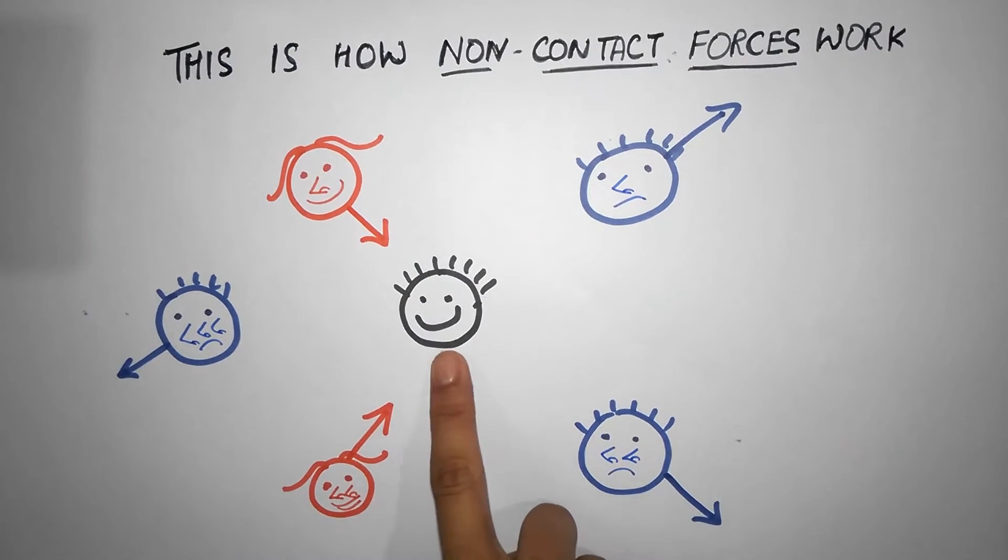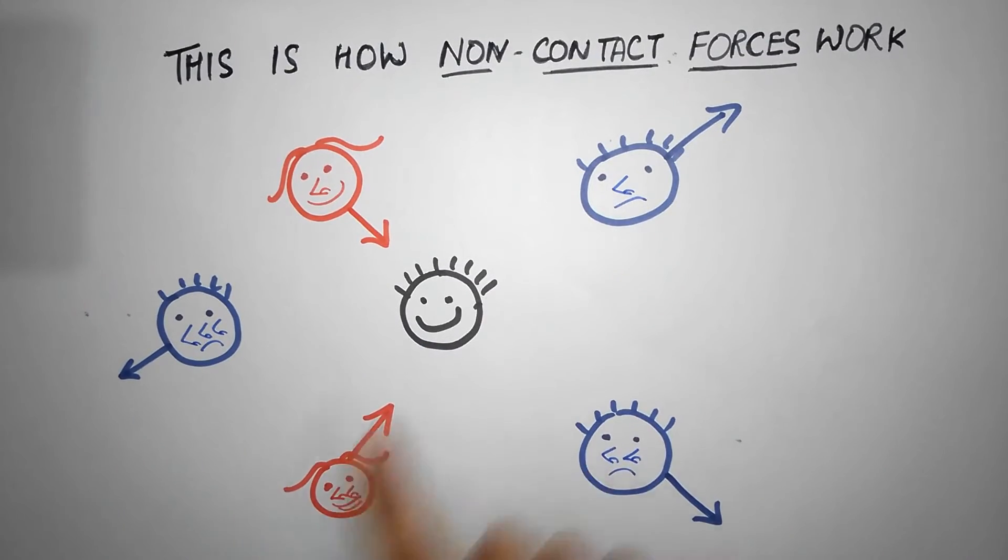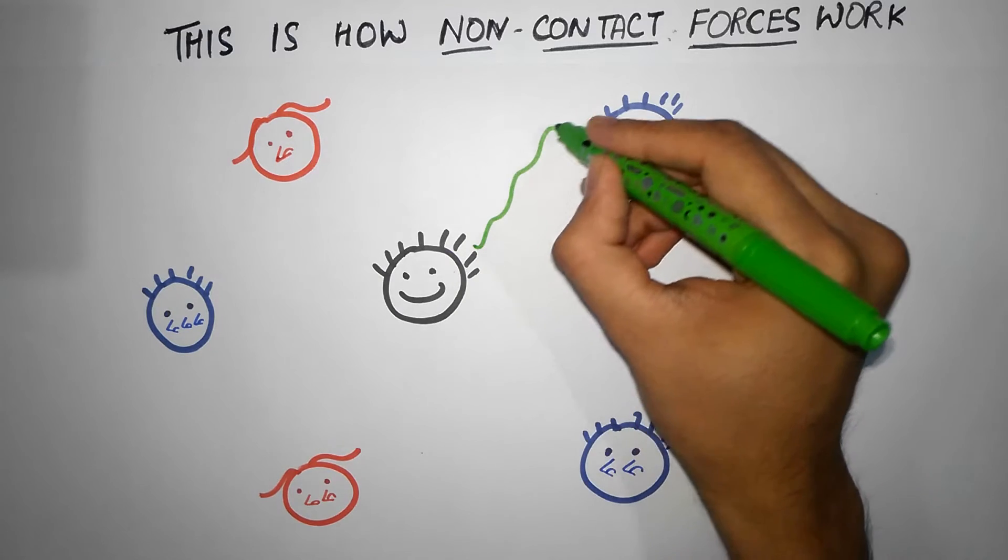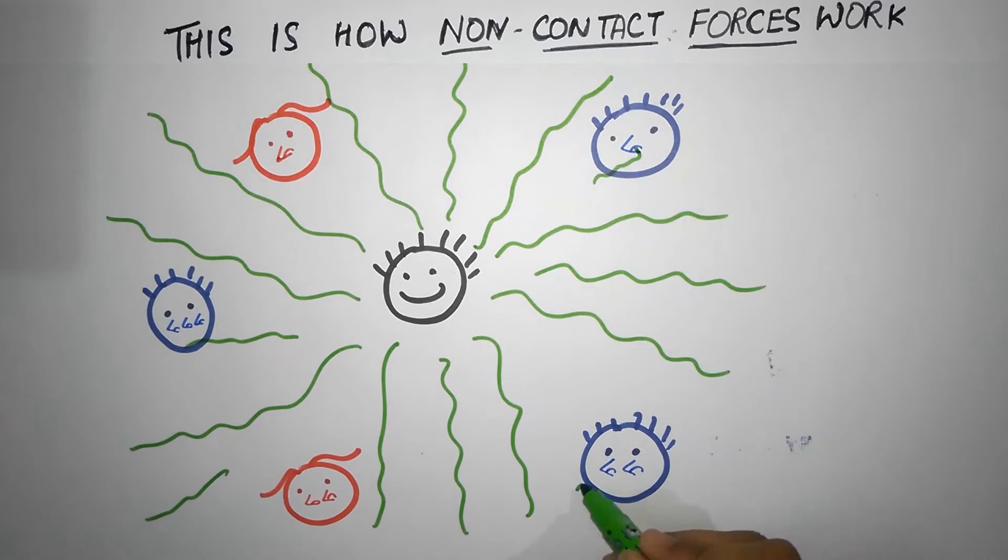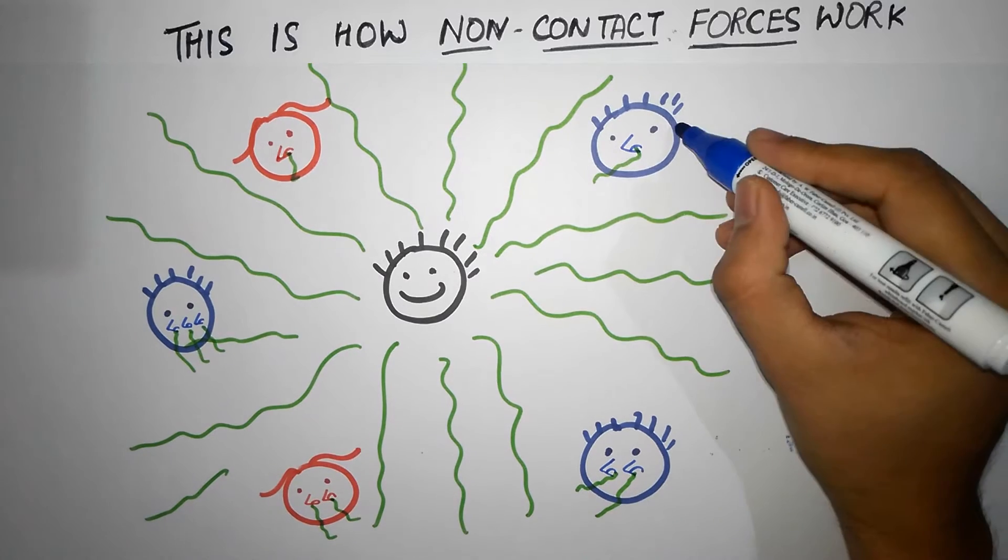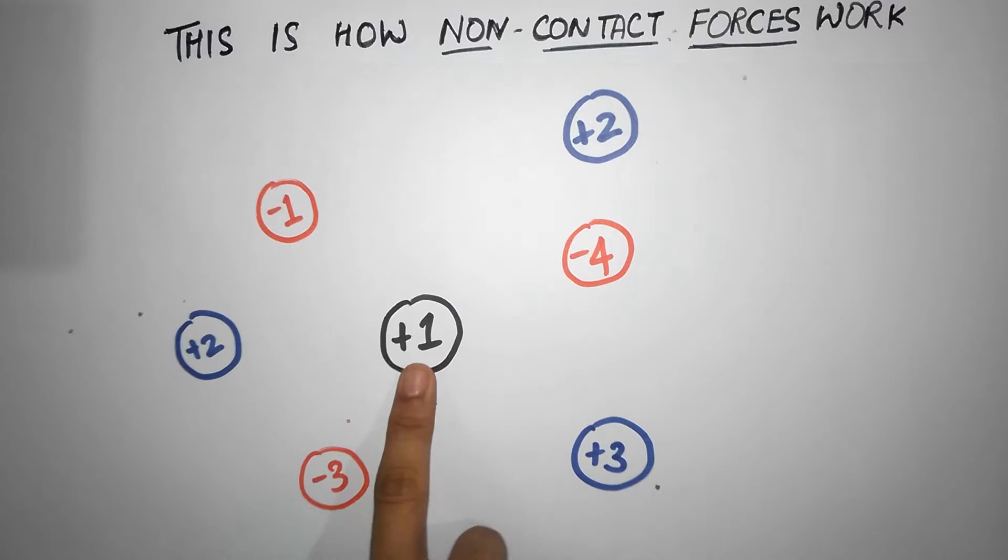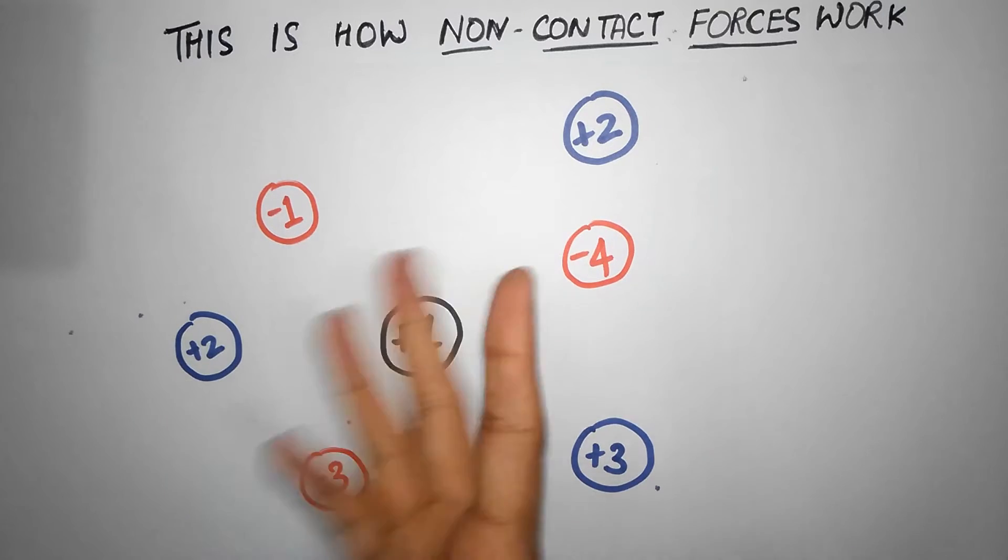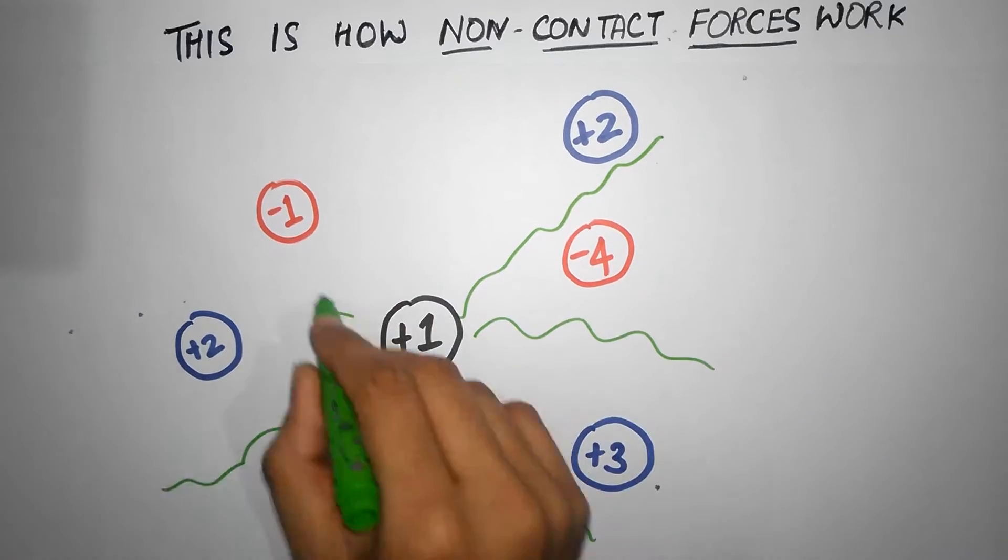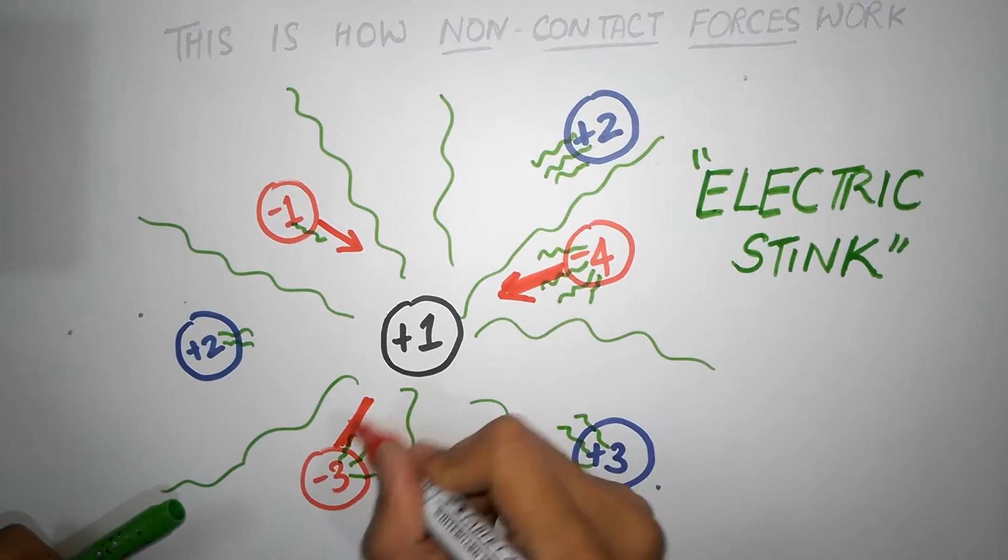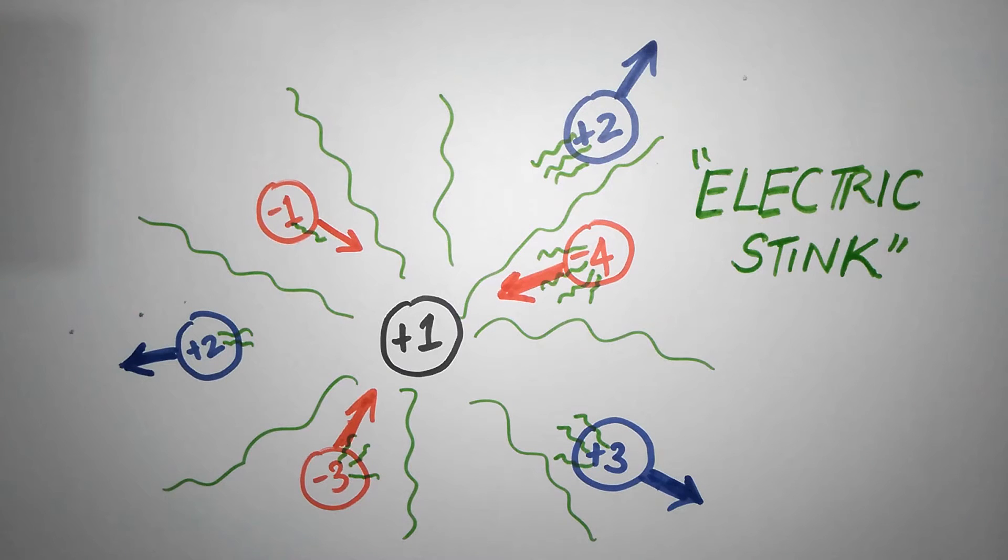Think about it. I'm just standing here and attracting and repelling people without being in contact with them. Notice that I am not doing this directly. My job is just to create a stink in the room, and depending on the number of noses and the kind of nose, people get affected by it and automatically experience a force. Similarly, this charge is not directly attracting or repelling anyone. Instead, it's producing its own stink, an electric stink if you may. And these particles either get attracted or repelled because they have a nose, I mean charge, to smell that stink.